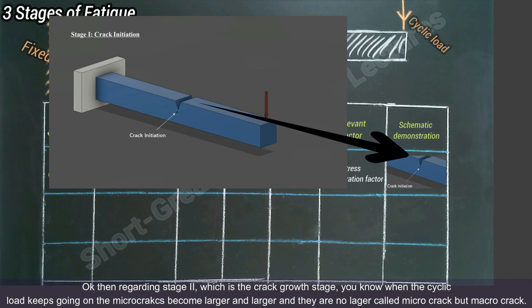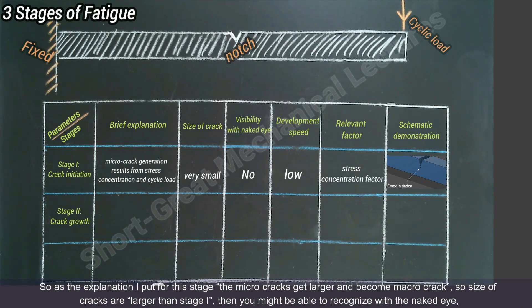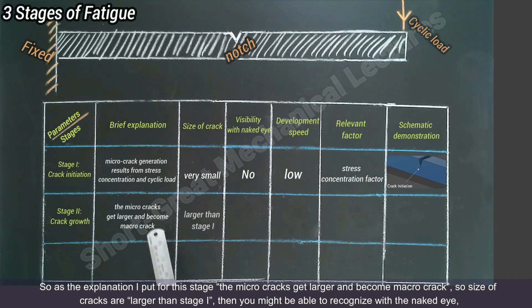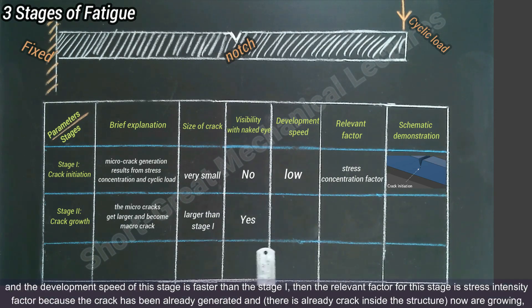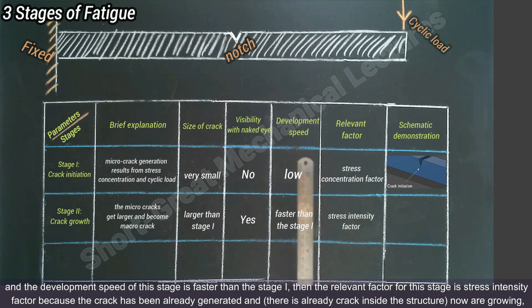Regarding stage two, which is the crack growth stage: when the cyclic load keeps going on, the micro cracks become larger and larger and are no longer called micro cracks but macro cracks. The micro cracks get larger and become macro cracks. The size of cracks is larger than in stage one, and you might be able to recognize them with the naked eye because they are larger. The development speed of this stage is faster than stage one. The relevant factor for this stage is the stress intensity factor, because the crack has already been generated inside the structure and is now growing.